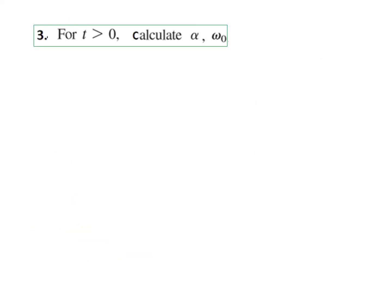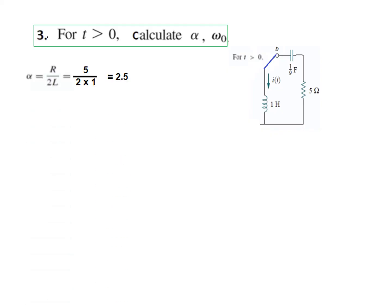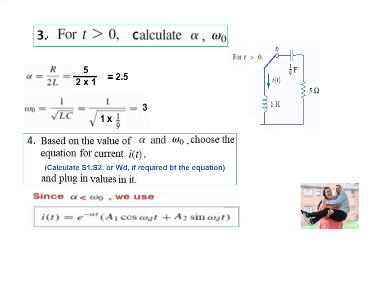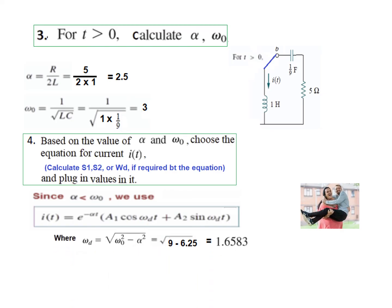For step 3, calculating alpha and omega for the t greater than 0 circuit: alpha = R over 2L = 5 divided by (2 × 1) = 2.5, and omega 0 = 3. Since alpha is less than omega, this is again the under-damped case, and we use the cosine-sine current equation. We calculate omega_d using the formula and substitute the values into the general equation for i(t).